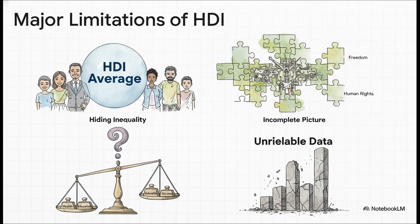But — and this is a big but — the index is far from perfect, and this is the entire point of our exam question. This is the stuff you need in your answer. For starters, it's just an average, which means it can totally hide huge gaps between the rich and poor. It also leaves out a ton of important stuff, like human rights or how healthy the environment is. Then there's the fact that each part is simply weighted a third — that's a choice, not a science. And finally, all of this depends on data that can be a bit shaky, especially when you're looking at developing countries.